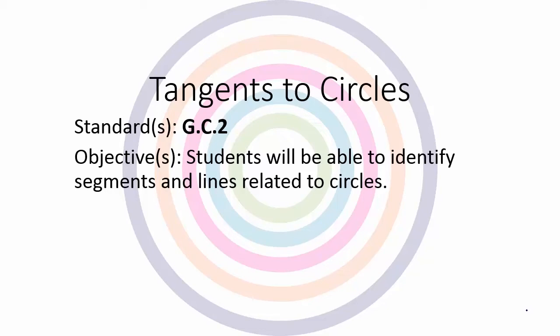Hello. In today's lesson, we are looking at Chapter 10, Section 1, Tangents to a Circle. Our objectives are: students will be able to identify segments and lines related to circles.